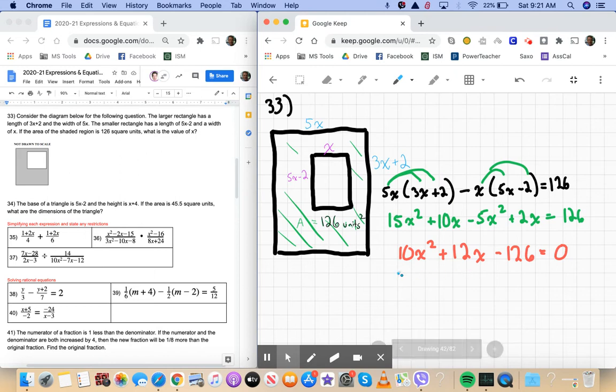So, 2 times 5x squared plus 6x minus, let's see, half of 126 is 63, so minus 63. Okay, is equal to 0.